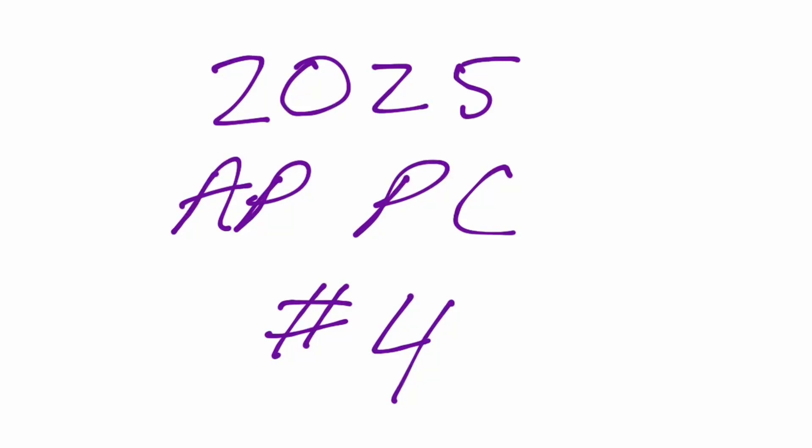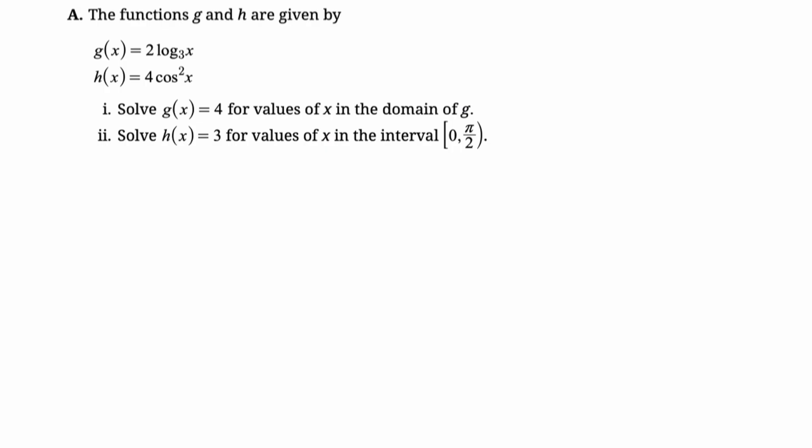In this video, we're going to be doing number four from the 2025 AP pre-calculus exam. This is the one where you just do a lot of symbolic manipulation and solving. The functions g and h are given by g(x) = 2log₃(x) and h(x) = 4cos²(x). First up, we need to solve g(x) = 4 for all values of x in the domain of g. So in the domain of g, kind of important here.